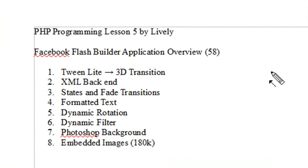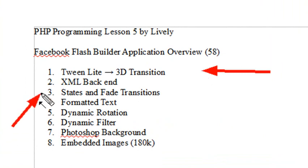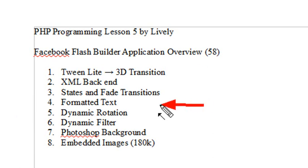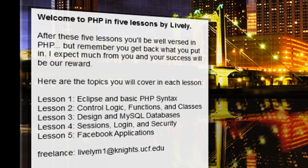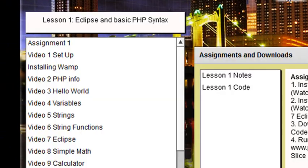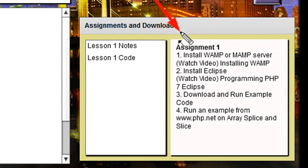We're going to show you how to use TweenLight and do 3D transitions. We're going to show you how to build that XML backend, how to make states and fade transitions, and how to use formatted text — which you may look a long time on the web before finding. All this text right here is actually HTML formatted, and I'm bringing it into the Spark containers. If you take a look at this assignment, though it looks simple, it has all HTML. You can bring HTML into those containers, but it's actually not trivial — it's not as straightforward as it used to be.